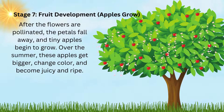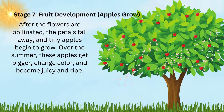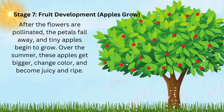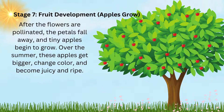Stage 7: Fruit Development. After the flowers are pollinated, the petals fall away and tiny apples begin to grow. Over the summer, these apples get bigger, change colour and become juicy and ripe.